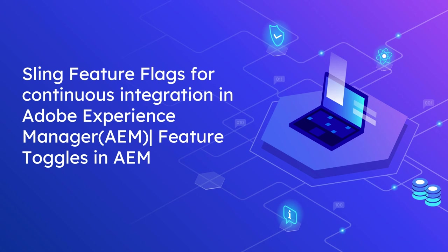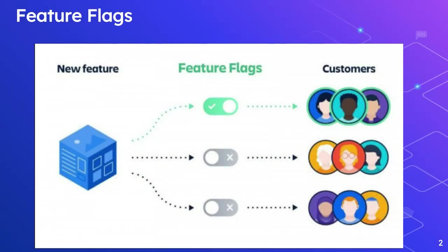Feature flags are used to select whether a particular feature is enabled or not in the application. This allows us to continuously deploy new features of an application without making them globally available yet. The new features can be controlled through feature flags to be available only to a specific set of users. This will help us to enable continuous integration without impacting the global platform.